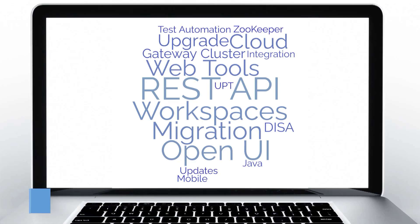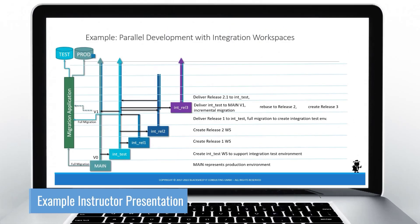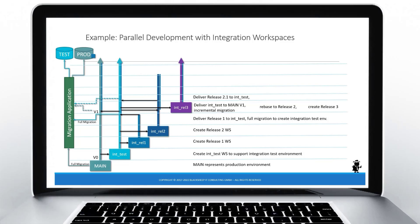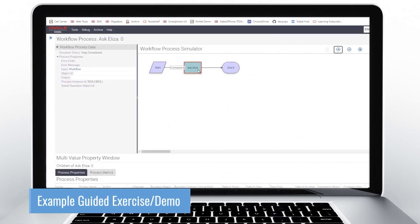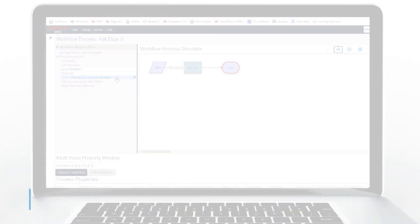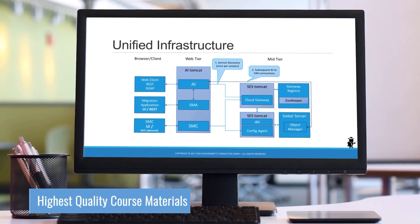Learn more with clear, precise instructor presentations. Siebel 22 has a mid-level release. They want to push to integration test and then incrementally migrate that content to the test database. Learn better with comprehensive exercises and demonstrations. Now the next step to be executed is the business service, and we can click simulate next. This executes the business service, and we can inspect the output in the workflow process data panel.